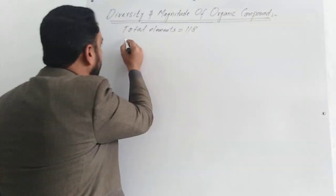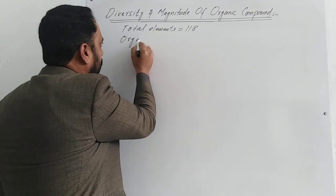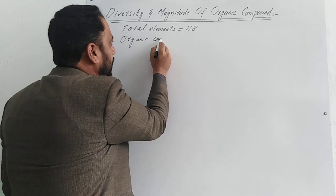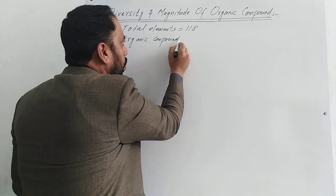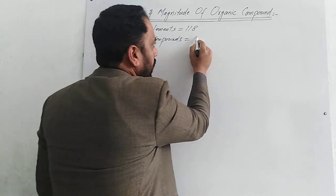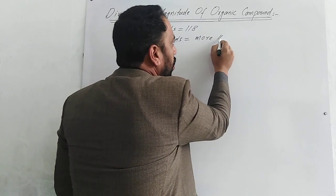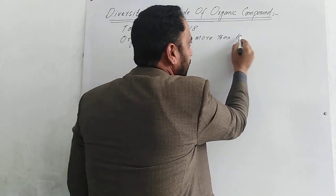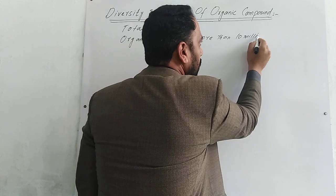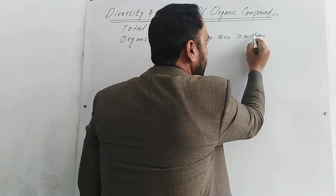180 elements have been discovered. Total elements discovered, that is 180. Now, how many organic compounds have been made? More than 10 million.